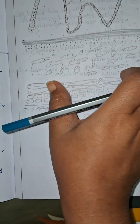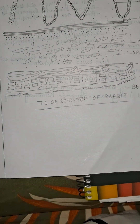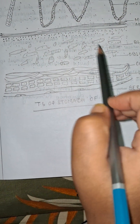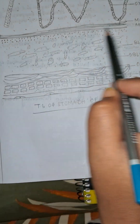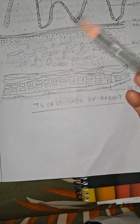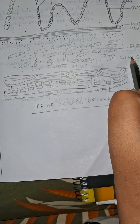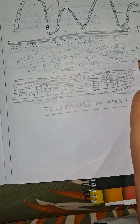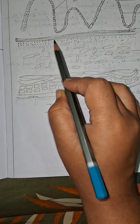The third layer is the submucosa layer, found just below the muscularis mucosa layer. The submucosa layer generally contains blood vessels, connective tissues, nerves, and lymph vessels, as these are required for the proper functioning of the cells. These tissues — connective tissues, blood vessels, nerves, and lymph vessels — are all found in the submucosa layer.